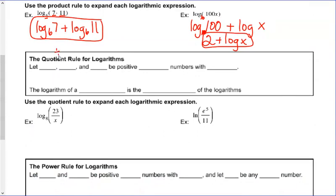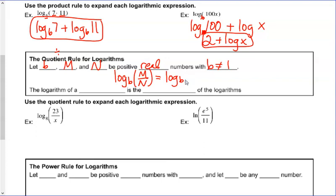Now we turn to the quotient rule, meaning division. We're also going to let B, M, and N be positive real numbers with B not equal to 1. Similarly to the product rule, now we have log base B of M over N, where I have a quotient. By its property, this is equivalent to log base B of M minus log base B of N. So you have a quotient and a difference, whereas up top you had a product and a sum — the logarithm of a quotient is the difference of the logarithms.